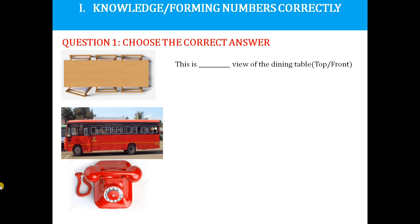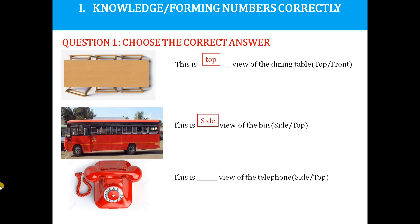This is the best view of the dining table. Options given: top, front. The correct answer is top. Next picture: this is the view of the bus. Options given: side, top. The answer is side. Next picture: this is the view of the telephone. Options given: side, top. The correct answer is side.